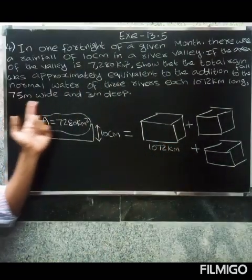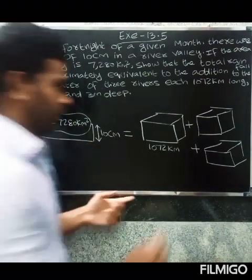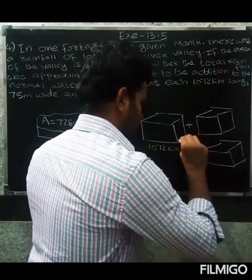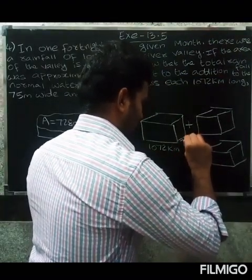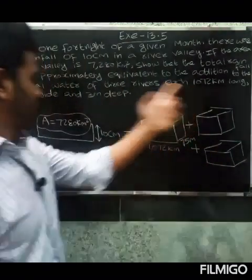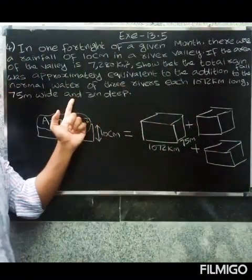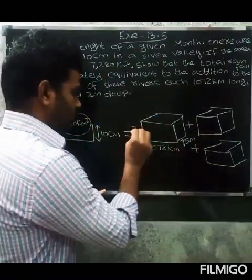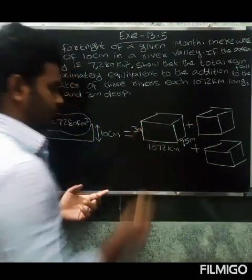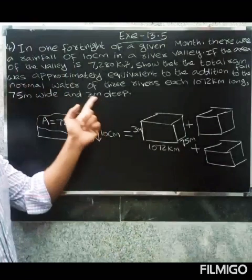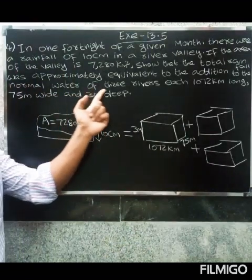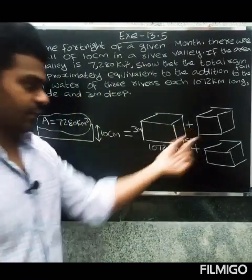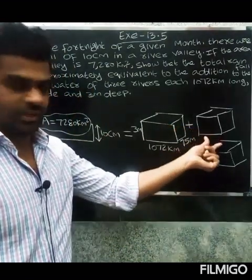Breadth is 75 meters, height is 3 meters deep. So height is 3 meters, and this is the volume of the 3 rivers. First river, second river — same measurements for all three.